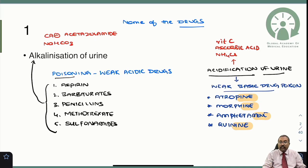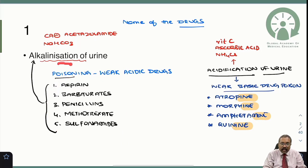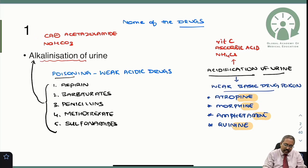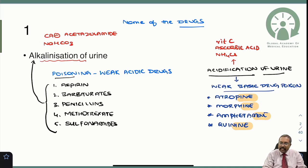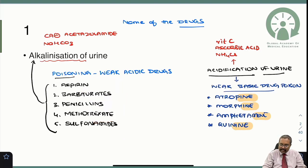In your exam, if they ask which drugs require alkalinization of urine, go for weak acidic drugs. If they ask which substance is used for alkalinization, go for sodium bicarbonate or carbonic anhydrase inhibitor. If asked about drugs requiring alkalinization, go for aspirin, barbiturates, penicillin, methotrexate, and sulfonamides.